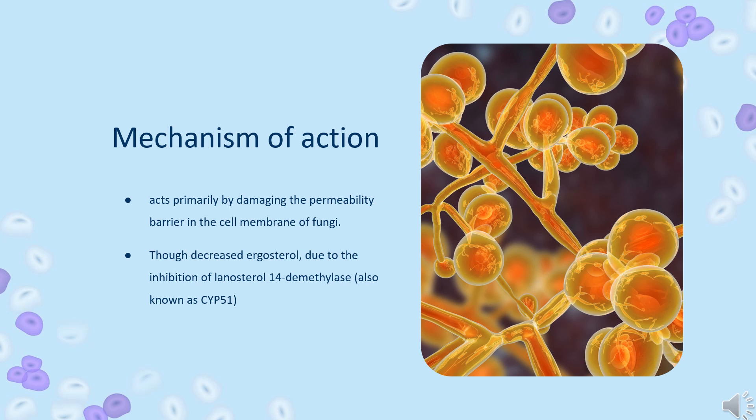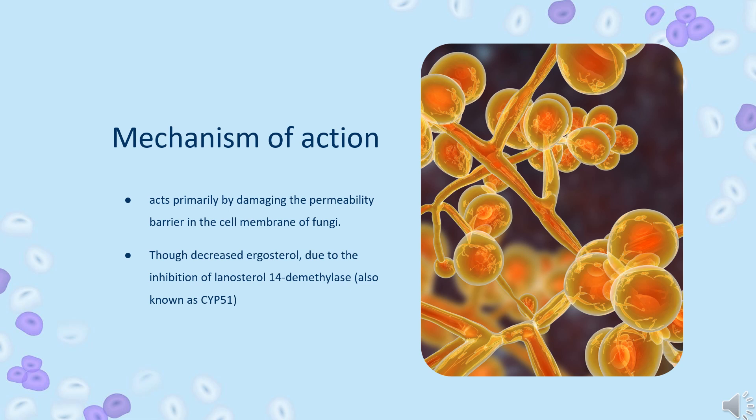Econazole may also inhibit endogenous respiration, interact with membrane phospholipids, inhibit the transformation of yeasts to mycelial forms, inhibit purine uptake, and impair triglyceride and/or phospholipid biosynthesis.